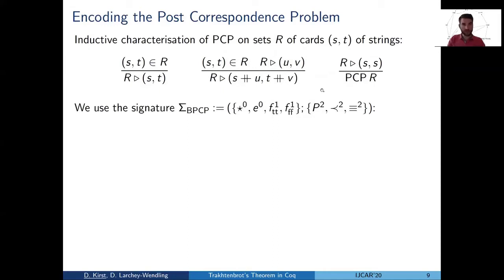So what do we need to encode this in first order logic? First, we need a custom signature. In the function symbols, we need two constants and two unary functions where we can represent strings. And then we need some binary relation symbols for derivability, for strict prefixes, and for equality.